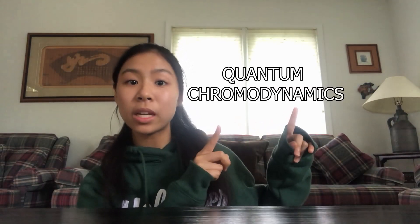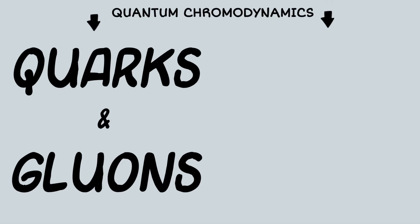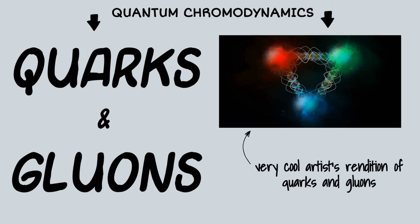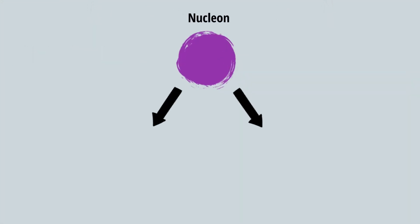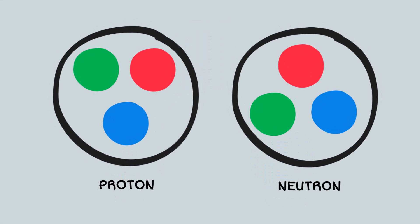Back to chromodynamics. Quantum chromodynamics deals with particles called quarks and gluons that are essentially sub-subatomic particles. Quarks are found in nucleons, and each nucleon contains three quarks, which can either be up or down. Up and down do not really have much to do with direction — they simply provide a name for complex properties of different quarks.